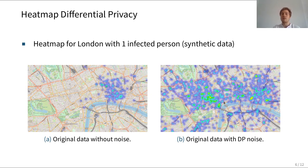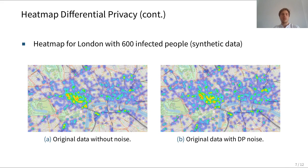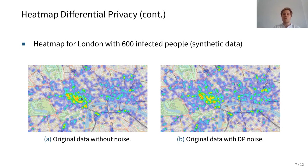Clearly, with only one person the noisy heat map has no utility. But the picture changes when we include many more patients. Here on the left we have a heat map for 600 infected people, and on the right we apply differential privacy. Even though each individual's location is drowned in noise, hotspots are still clearly visible on the right side. So the utility of the heat map is preserved even when using differential privacy.